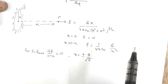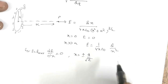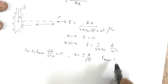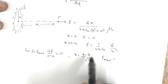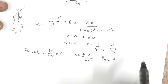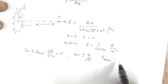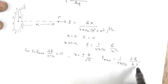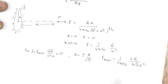...electric field is maximum. The maximum value: substituting the value of x, you get E_max = (1/4πε₀) × 2Q / (3√3 × a²).